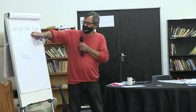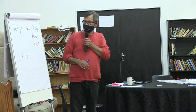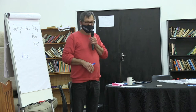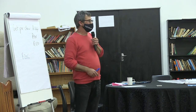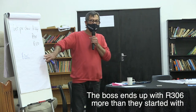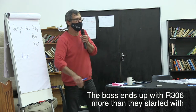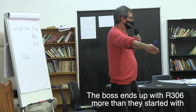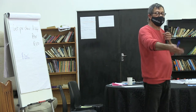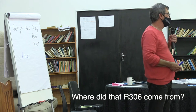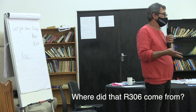The bosses started out with something that cost them 144 rand. But they end up getting 450 rand. Which means they end up with something that is now worth more — 306 rand more than when they started. The question now comes: where did that 306 rand come from?